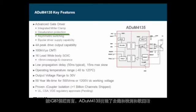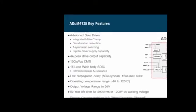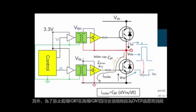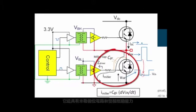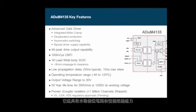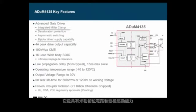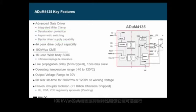In terms of IGBT protection, the ADUM4135 implements desaturation detection with soft turn off. Also, in order to prevent DVDT induced turn on of the low side IGBT during the turn off transient of the high side IGBT, it includes a Miller clamp circuit as well as bipolar drive capability. Additional reliability in the presence of fast switching transients is provided by the 100 kV per microsecond common mode transient immunity spec.